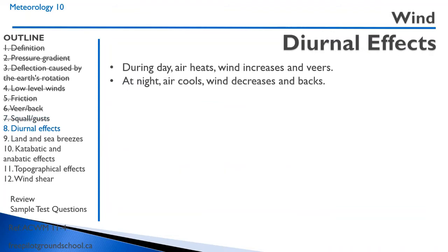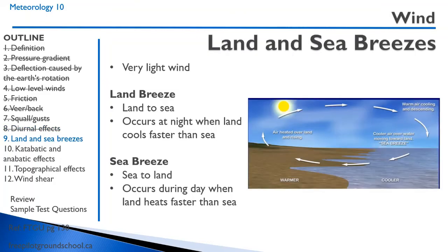Diurnal means with reference to day or night. During the day, the air heats and the wind increases and veers. At night, the air cools and the wind decreases and backs. In coastal areas, we can have light winds called land and sea breezes. A land breeze occurs at night when the land cools faster than the sea. A sea breeze occurs during the day when the land heats up faster than the sea.